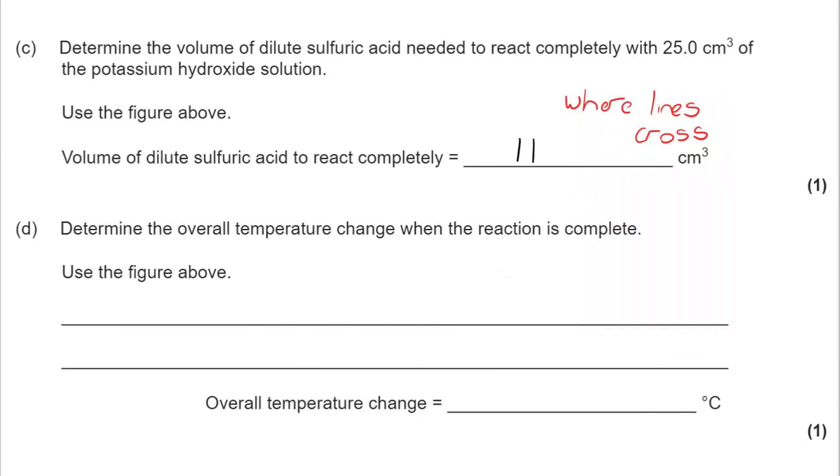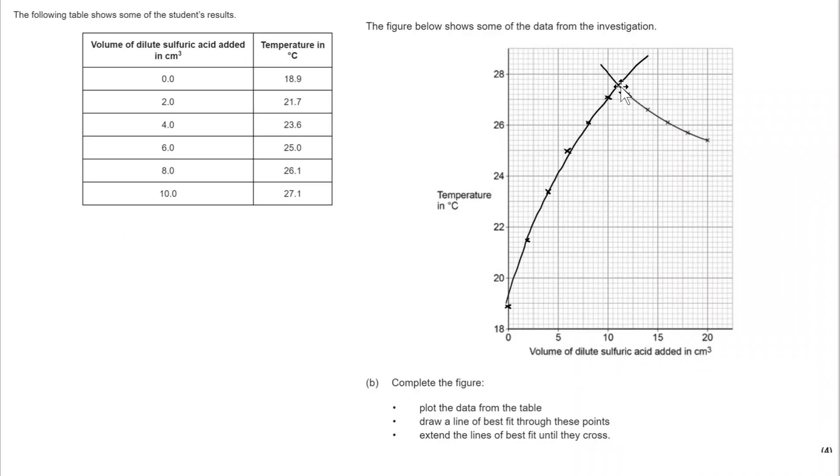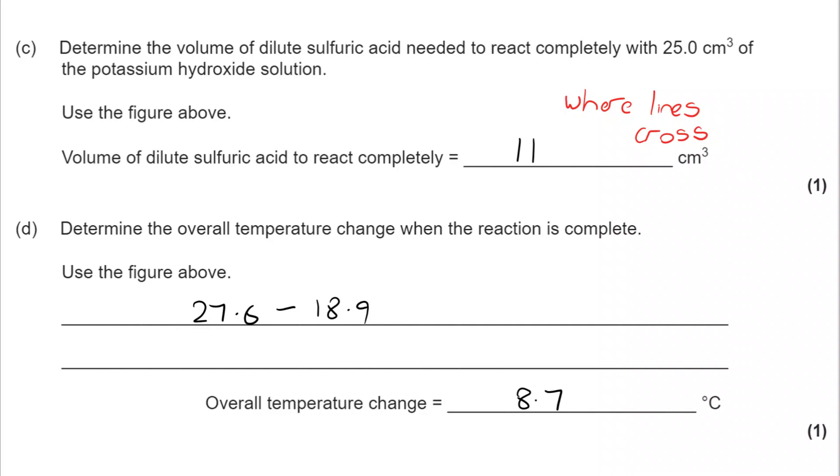Determine the overall temperature change when the reaction is complete. Again, you are using the figure above. So it's going to be 27.6 take away 18.9. Let's see where those figures come from. The maximum temperature is 27.6. It started at 18.9. So the overall temperature rise we can see comes to 8.7 degrees C.